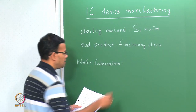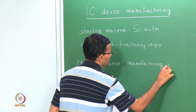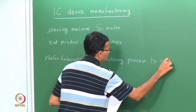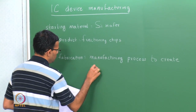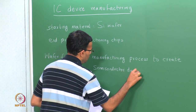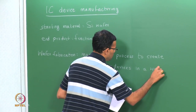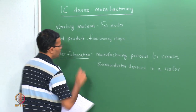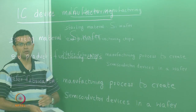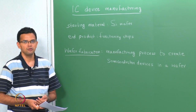We can define wafer fabrication as a manufacturing process to create semiconductor devices in a wafer surface. Today we are going to look at the overview of the wafer fabrication process, and then in the next few classes we will look in detail at some of the individual steps. But before we go to the overview, I'd like to look at some definitions.